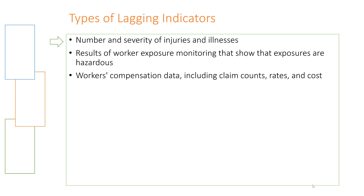There are also several types of lagging indicators, including the number and severity of injuries and illnesses, the results of worker exposure monitoring, and a number of other things that can be used as indicators of the failure of health and safety systems.